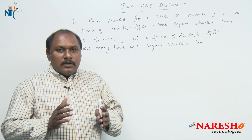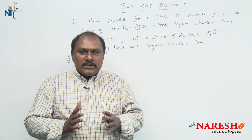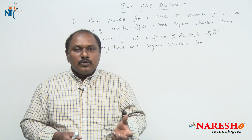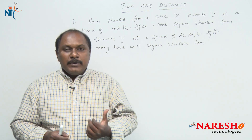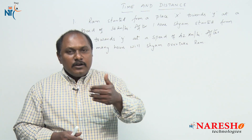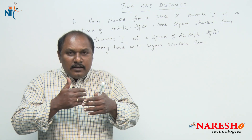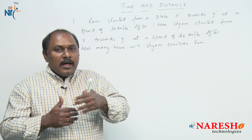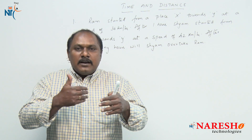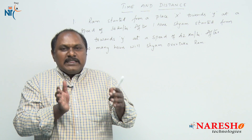This question can be answered in different ways. First, we can answer it orally. Ram started from X towards Y at 36 km per hour, and after 1 hour Shyam started from the same place X towards Y at 42 km per hour. So by the time Shyam started from X, Ram is already 36 km away. That is, the distance between Ram and Shyam when Shyam starts travelling is 36 km.